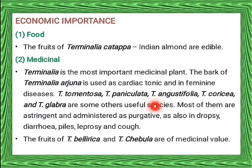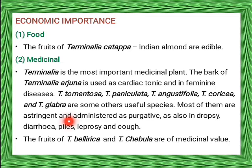Most of them are astringent, meaning they cause contraction of skin cells and other body tissue, and are administered as a purgative — a strongly laxative effect. Also used in dropsy, a disease involving swelling of soft tissue due to accumulation of excess water; diarrhea; piles — swollen veins in the rectum and anus causing discomfort and bleeding; leprosy — a chronic, curable disorder mainly causing skin lesions and nerve damage; and cough.